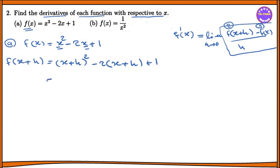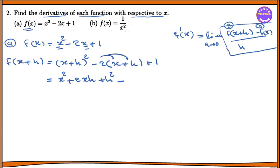So x plus h the whole square minus 2 into x plus h plus 1, minus x squared minus 2x plus 1. Now expanding: x squared minus 2x plus 1.